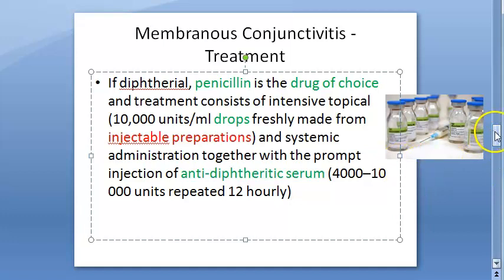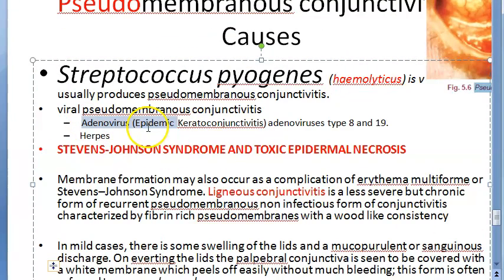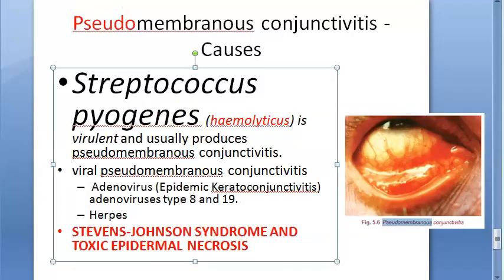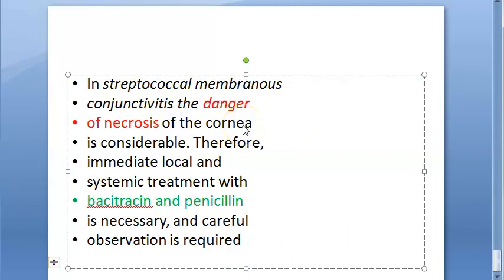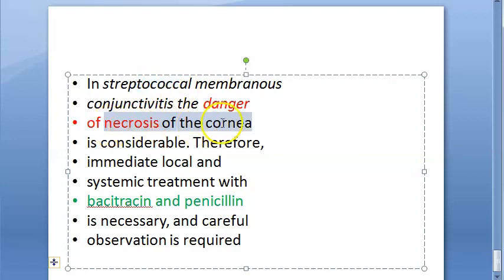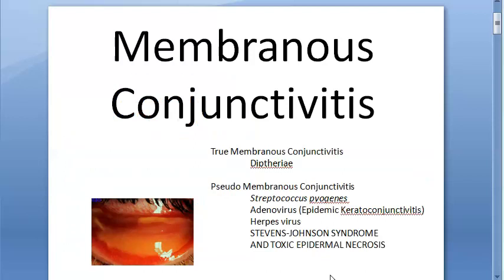Pseudomembrane can be caused by Streptococcus pyogenes (beta-hemolytic), adenovirus — that is, epidemic keratoconjunctivitis caused by adenovirus type 8 and type 19 — herpes virus, Stevens-Johnson syndrome, and toxic epidermal necrolysis. For pseudomembranous conjunctivitis, treatment is with penicillin and bacitracin, both systemic and local. Streptococcal infection can lead to necrosis of the cornea, so immediate local and systemic treatment with bacitracin and penicillin is required, along with careful observation.